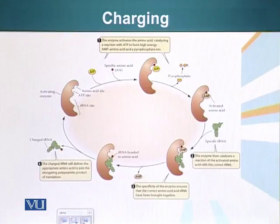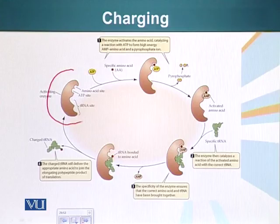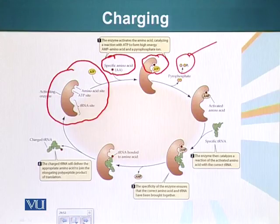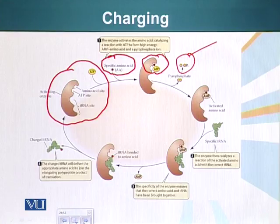Let's look at this process with the help of a diagram. Here we have this enzyme. It first binds an ATP molecule and the amino acid — here is a specific amino acid, whatever amino acid it is. Here is the active site of this enzyme for this catalysis. Pyrophosphate is removed, releasing a high amount of energy, and a very high energy bond between that amino acid and the AMP molecule is generated. We can say this particular amino acid has now been activated.